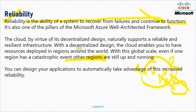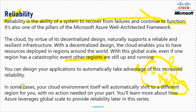You can design your application to automatically take advantage of this increased reliability. In some cases, your cloud environment itself will automatically shift to a different region for you with no action needed on your part. You will learn more about how Azure leverages global scale to provide reliability later in this series. The key definition is: it is the ability of the system to recover from failure and continue to function.